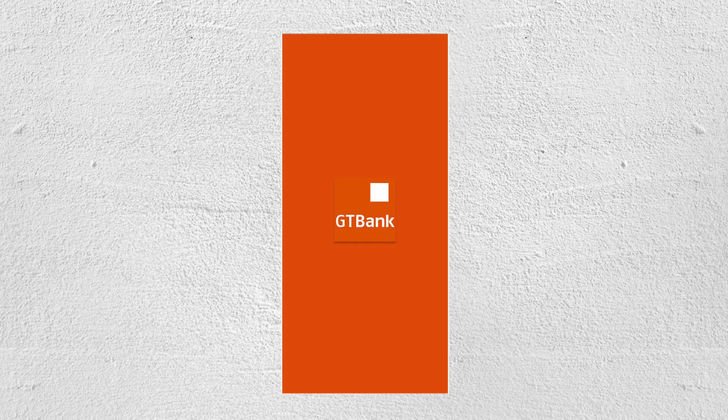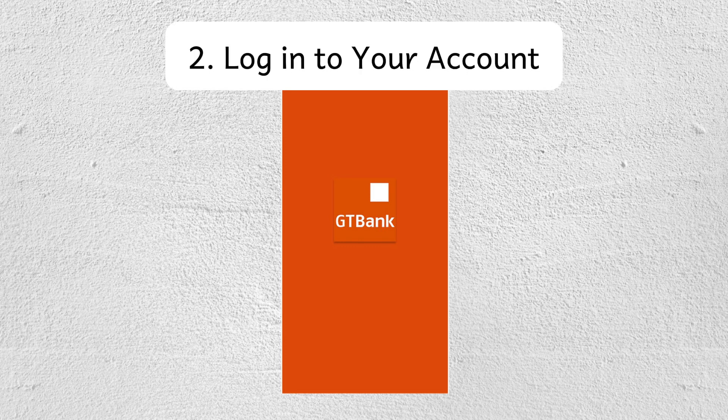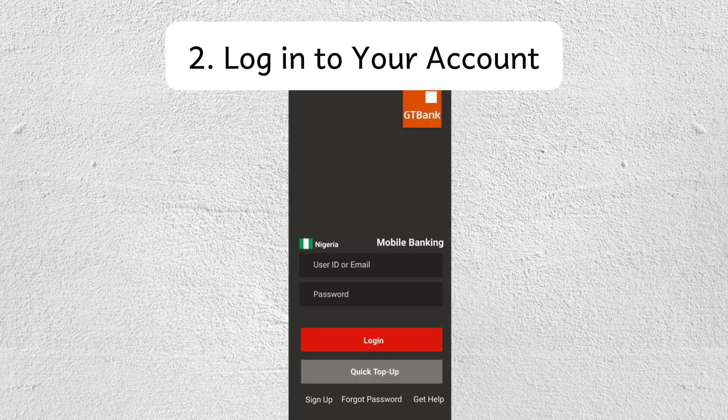In this video, I'm going to show you how to check your BVN on the GTBank app. First, unlock your smartphone and open the GTBank mobile app. If you haven't installed it, download the app from the Google Play Store or Apple App Store, then log in with your user ID and password, or use your fingerprint if enabled for quicker access.